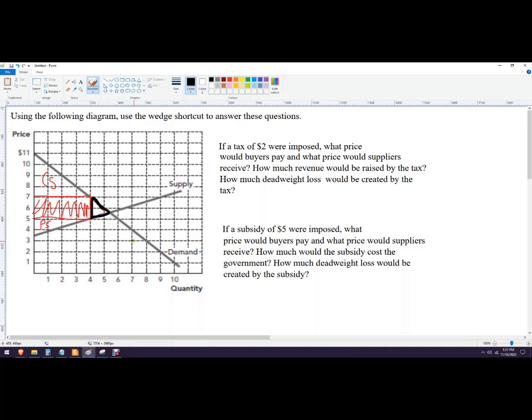So that's how to do that tax. Now if you didn't want to use the wedge shortcut, what you could do is either shift the demand curve down by $2, so you just go down here if the tax was placed on buyers.